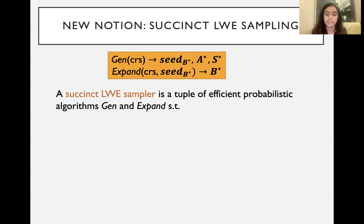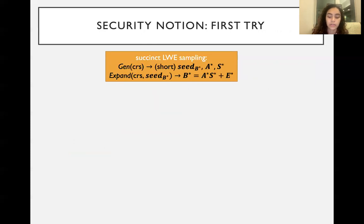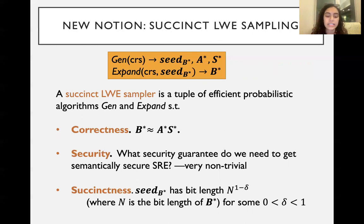We'll now define what we actually mean by succinct LWE sampler. So there's three properties we want. First being correctness. We basically, so we'll often write it as B* is equal to A*S* plus E*. However, just to define correctness this way, basically what we want is that B* is approximately A*S*. Security we'll get to in a second because it's very non-trivial. Intuitively, we basically want to be as close to the ideal world as possible. Again, the ideal world being where S* is truly random and E* is Gaussian. However, this is not really achievable, and so I'll talk in the next couple of minutes about what we actually do manage to achieve in terms of security. The last property that we want is succinctness. So succinctness states that the seed should have bit length N to the 1 minus delta, where again, N is the bit length of B*, for some delta less than 1.